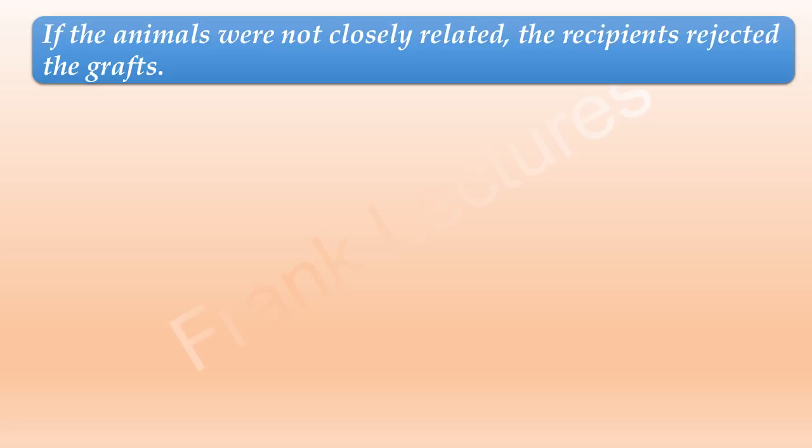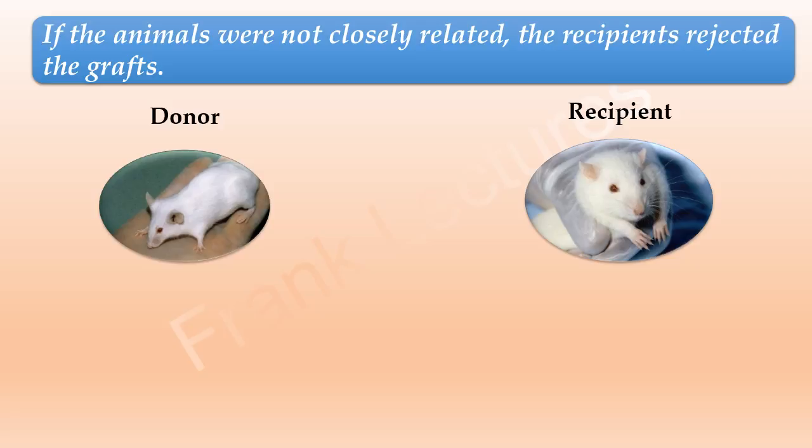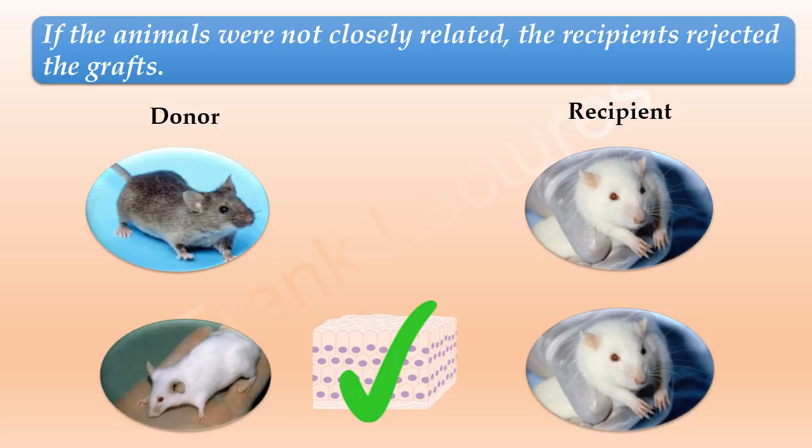If the donor mouse and the recipient mouse are of the same genetic background or same inbred strain, the transplanted tissue is accepted by the recipient. However, if the donor and recipient mouse are of genetically different backgrounds or different inbred mouse strains, the transplanted tissue is rejected by the recipient.